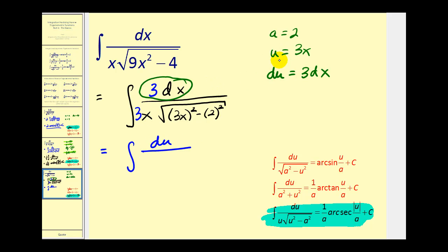So three dx is equal to du. Three x is equal to u. So this would be u squared. And a is equal to two, so this would be minus a squared. Again, it's a perfect match.